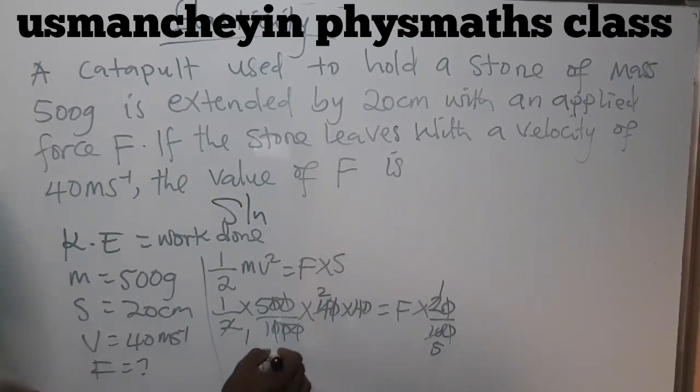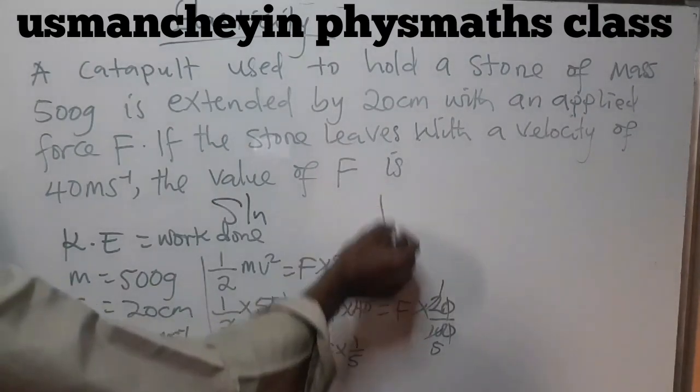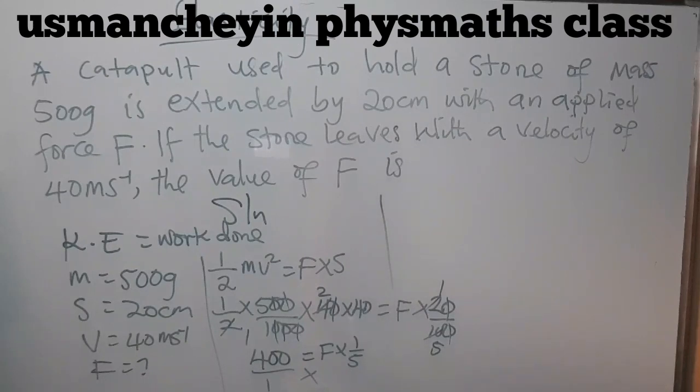So I have my 400 equal to F multiplied by one over five. From here, I will set over one. I will just cross multiply and I will get my answer as easy as anything.